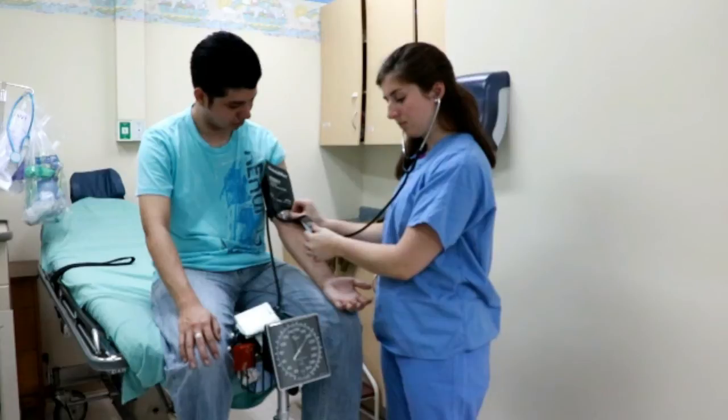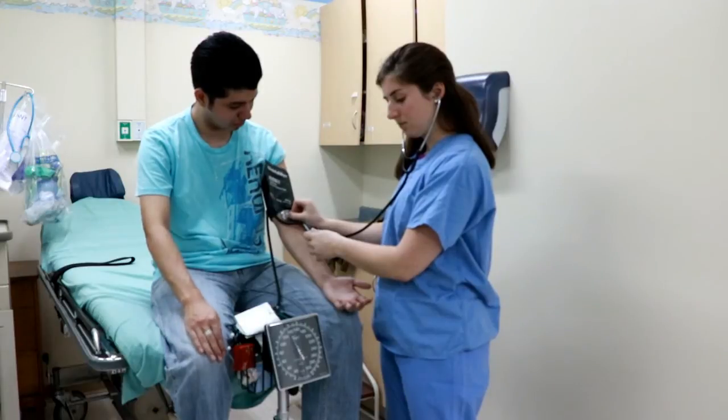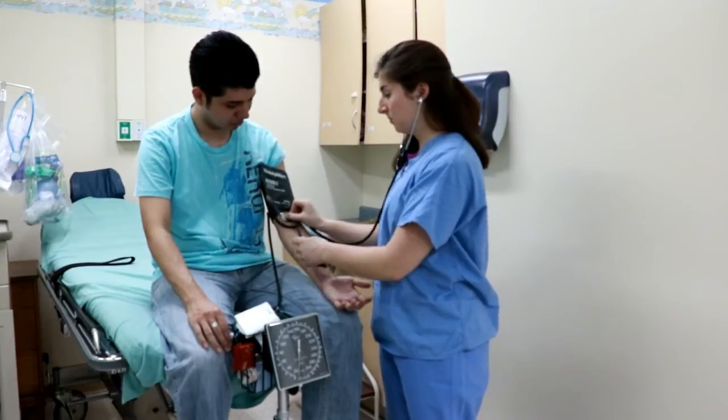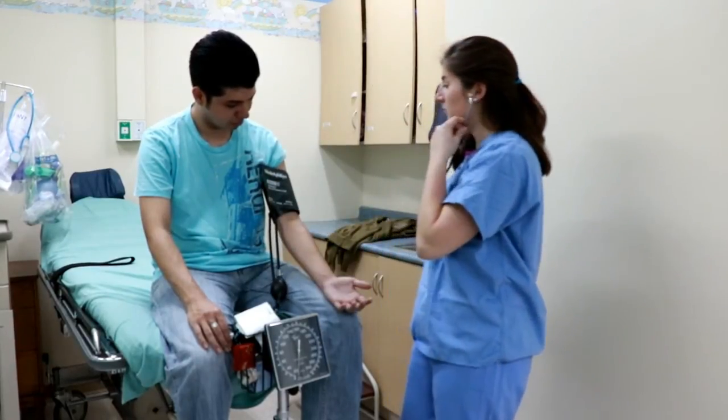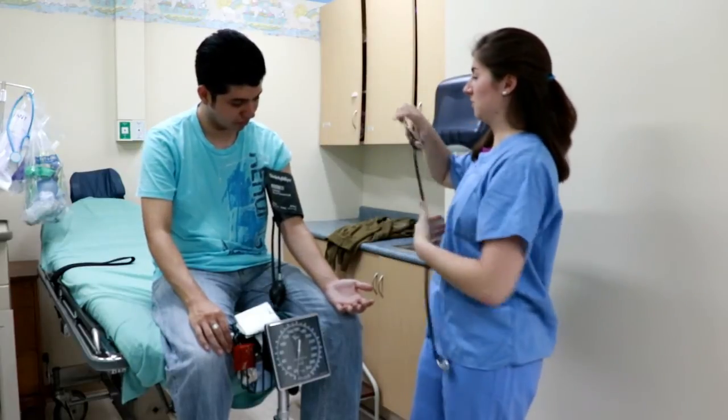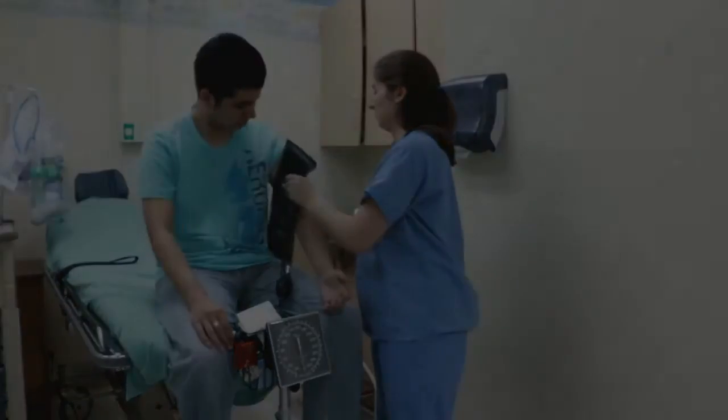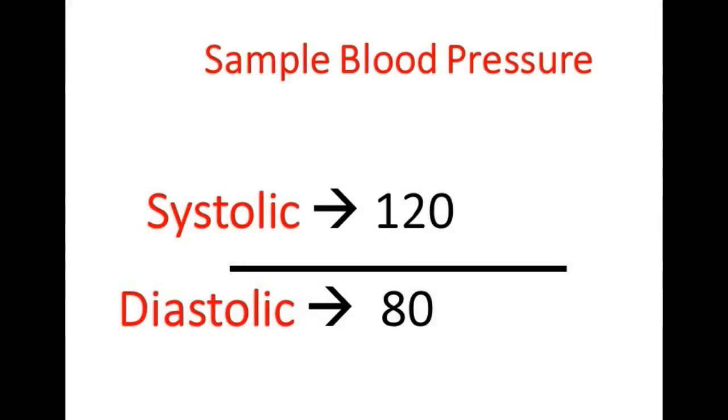Slowly release the valve so that pressure in the cuff decreases. The first pressure at which you hear a beat again corresponds to the systolic pressure and should be recorded as the first number in the blood pressure. As the cuff pressure continues to decrease, continue to listen until sounds of blood flow can no longer be heard. This pressure corresponds to the diastolic pressure and should be recorded as the second number in the reported blood pressure.